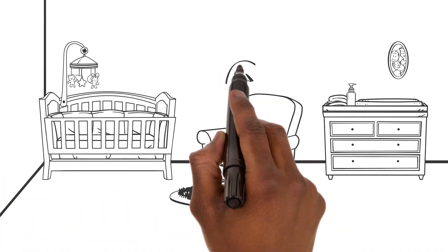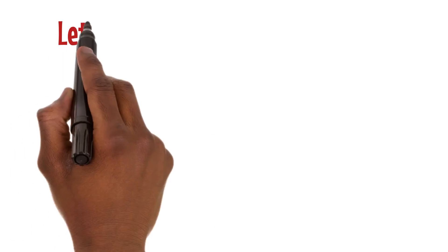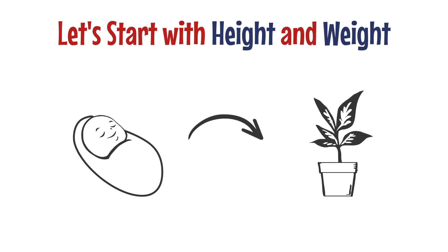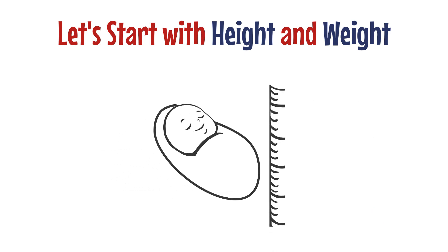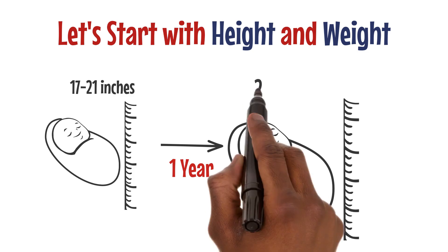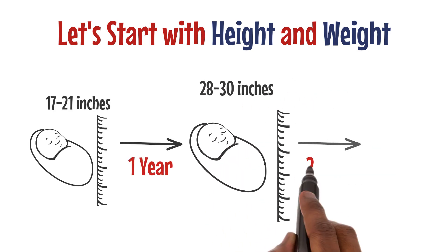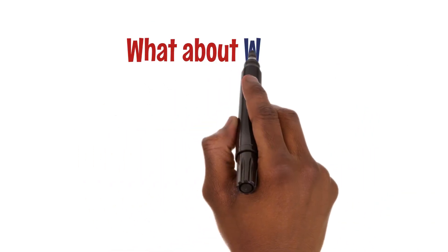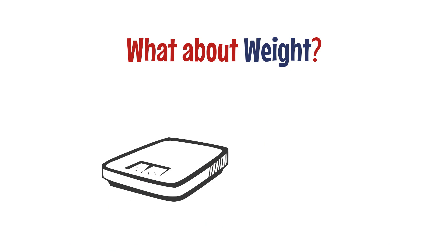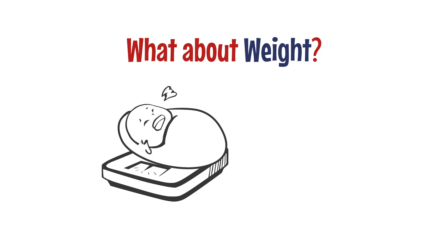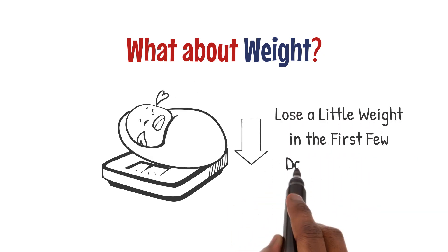In the early stages of life, babies undergo incredible changes. Let's start with height and weight — imagine a baby's growth is like a plant. At birth, an average Indian baby measures about 17 to 21 inches. By one year they've almost doubled in length. At two years they are typically around 30 to 34 inches tall. A newborn in India usually weighs between 2.5 to 3.25 kilograms, and it's normal for babies to lose a little weight in the first few days after birth.